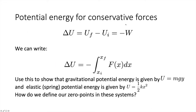For conservative forces, potential energy equals the negative of the work done. We can write: change in potential energy equals minus the integral from initial to final position of f(x) dx. Using this, we can show that gravitational potential energy is U = mgy, and elastic spring potential energy is U = ½kx². Let's derive both of these and then discuss how we define zero points in these systems.